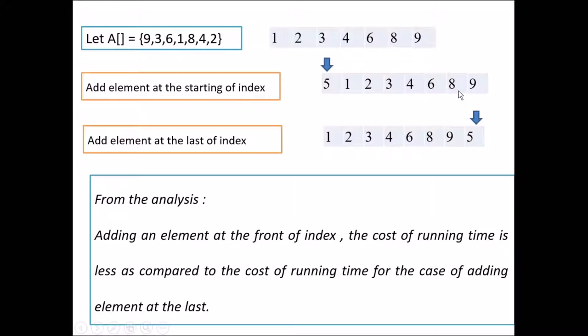Now again if you perform the sorting for these two cases, then we can say that adding an element at the front of the index, the cost of running time is less as compared to the cost of running time for the case of adding the element at the last. That is if you add the element at the beginning, it takes less time to sort the total array. If you add at the last of the index, then it will take more time compared to the previous case. And this analysis I have explained in my blog. And go through the link that is provided in the description of this video.